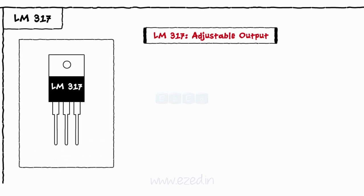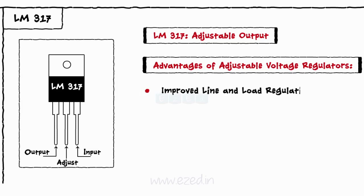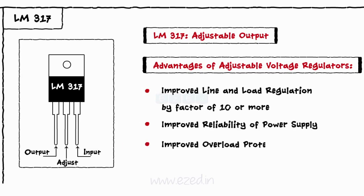LM317 is an IC with three terminals such as input, output and adjust. The adjustable voltage regulators have the following advantages over fixed voltage regulators: improved line or load regulation by a factor of 10 or more, improved reliability of power supply, improved overload protection.